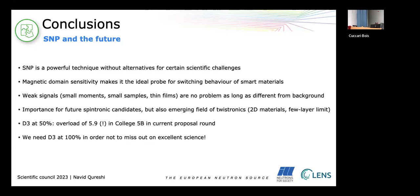Small problem is that our instrument D3 has been reduced to 50% capacity and we have a ridiculous overload of almost six in cycle 5B. So we are missing a lot of science and if we go on like this we will just kill our community. So my last conclusion is that we really need D3 at 100% in order not to miss out on that science. And with this I thank you for your attention.